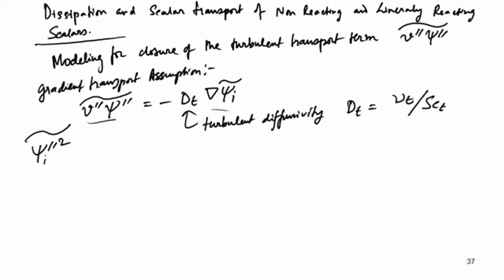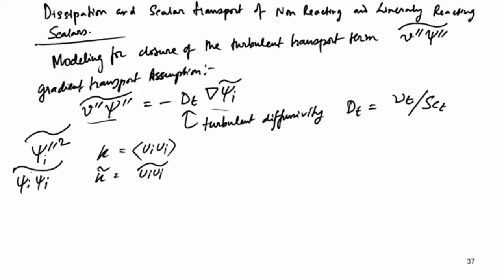Turbulent kinetic energy is essentially the variance of the velocity fluctuations u_i. So k is essentially u_i u_i, and for k-tilde it was u_i u_i tilde. Here it is essentially xi_i prime, and this quantity is xi_i times xi_i, where i is not in terms of direction but in terms of species. So it is analogous to turbulent kinetic energy.